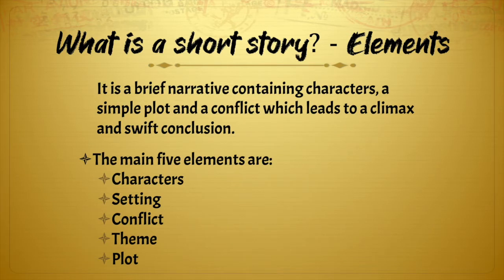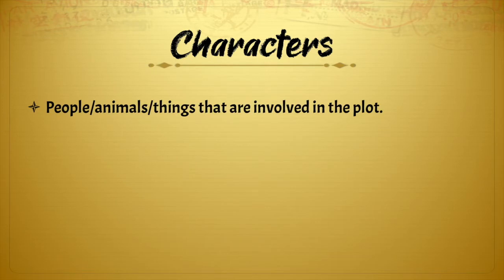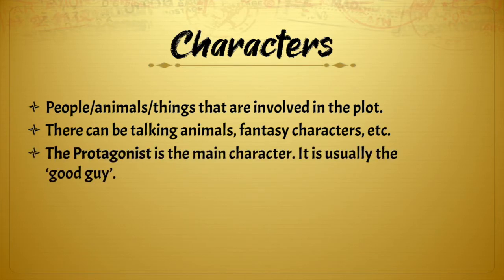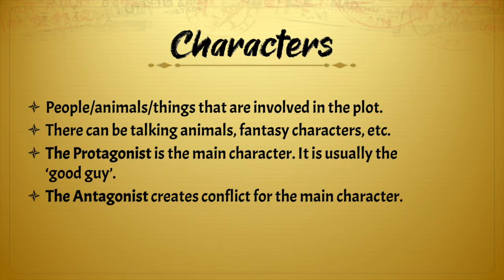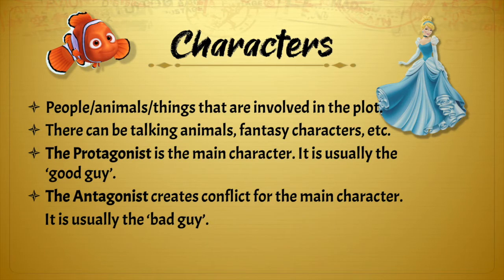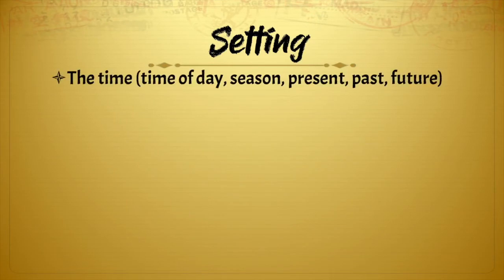Let's take a look at characters first — people, animals, or things that are involved in the plot of the story. There can be talking animals, fantasy characters, etc. The protagonist is the main character, usually the good guy. The antagonist creates conflict for the main character, usually the bad guy. For example, Nemo and Cinderella are protagonists, while the Joker is an antagonist — though recently he was portrayed as a protagonist in his own movie.